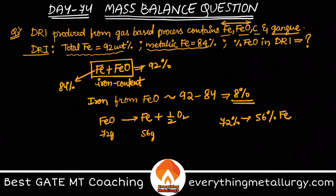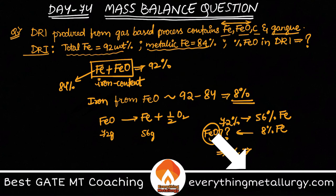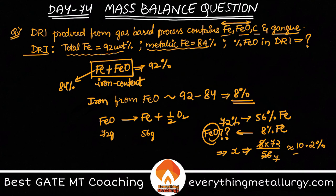Now we have 8% of Fe. So if 8% of Fe is present, how much will be the FeO content? Simple cross multiplication will give you the answer. Take this as X, which equals 8 × 72 / 56. This comes out to about 10.2%, which is the answer.